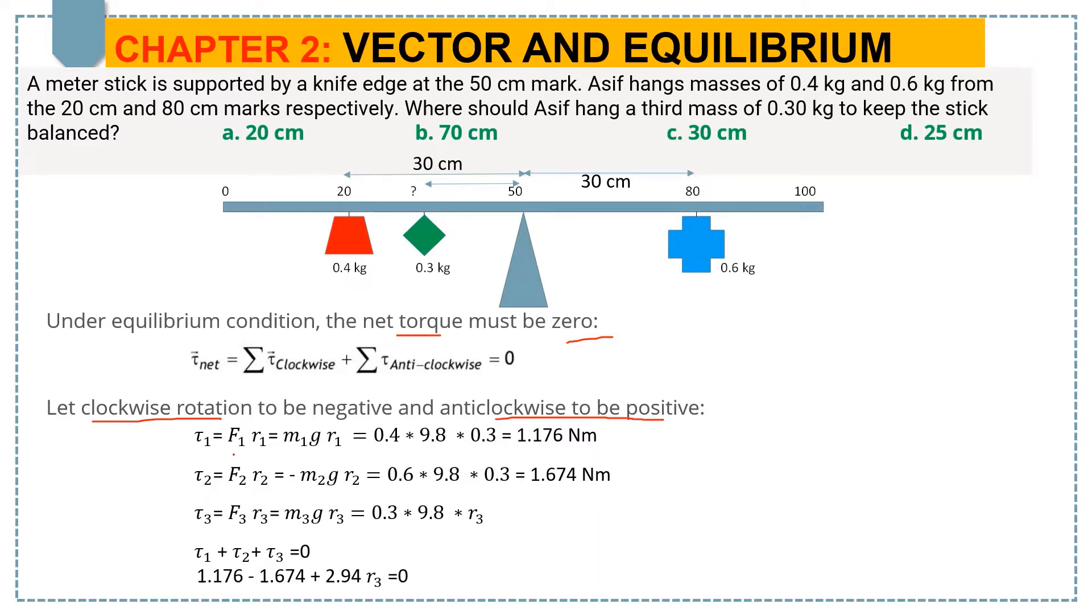If you look at the figure, the 0.4 kg mass is supposed to rotate anticlockwise and 0.6 kg is rotating clockwise. Hence, based on the criteria which we have selected,